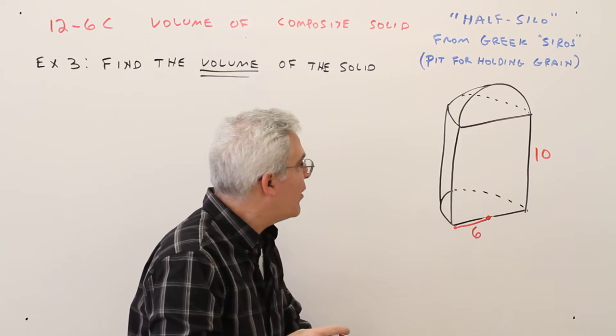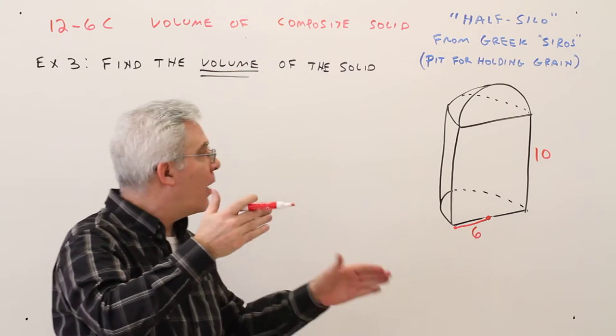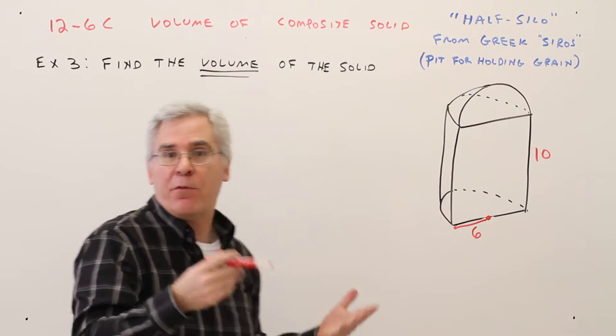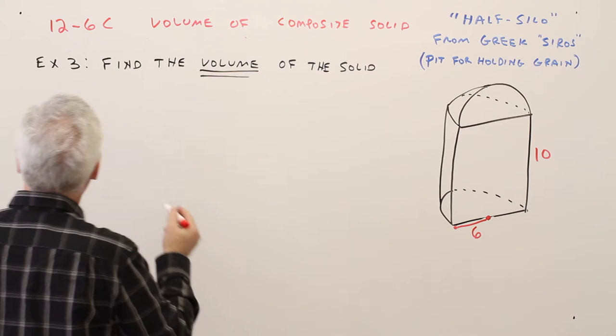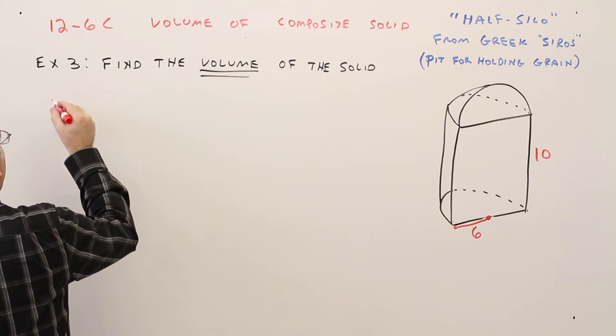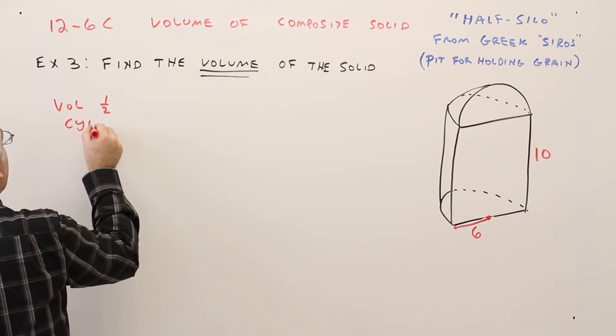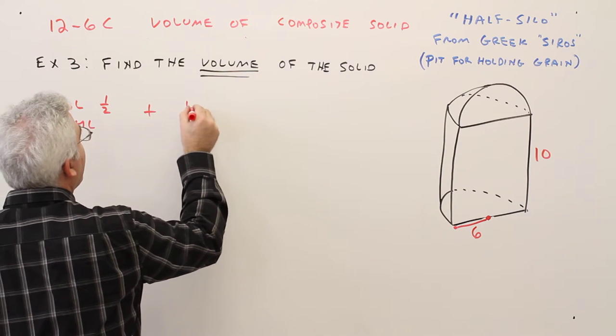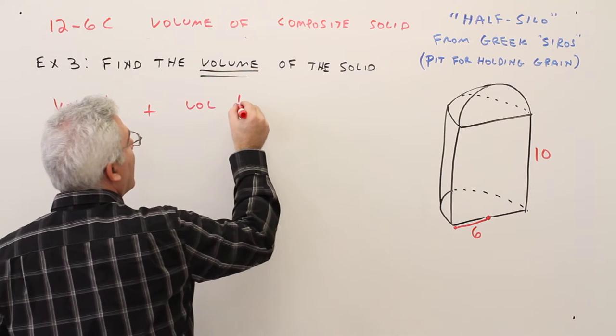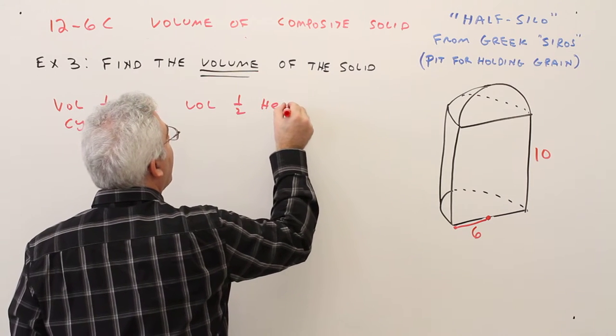And maybe this would be used if they had a divider, one part for grain, one part for barley, or something like that. Alright, so I'm just going to break it down. So the volume of a half cylinder plus the volume of a half of a hemisphere.